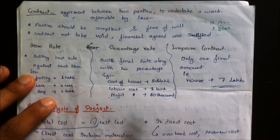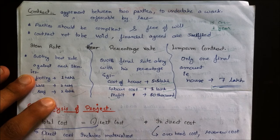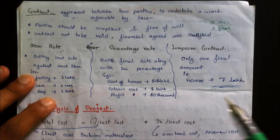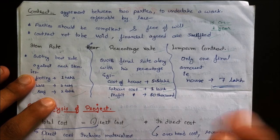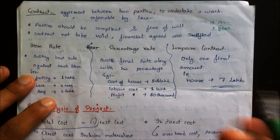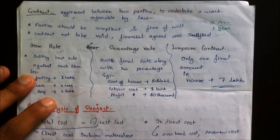For a contract to be valid, the parties should be competent and free of will. The contract must be financially agreed upon and justified — for example, not building a 10-storey building for 10 lakhs or a 20-storey building for 5 lakhs.